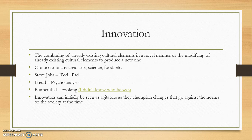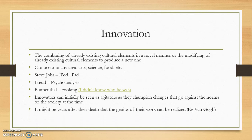An important thing to note about innovators is they can initially be seen as agitators. Anyone trying to innovate or change from the status quo is saying we can do things better, which will put some people offside. These people can initially be seen as going against the norms of society, and it might not be until years later that the genius of their work is realised. Van Gogh is a great example — his art didn't become famous until long after his death.